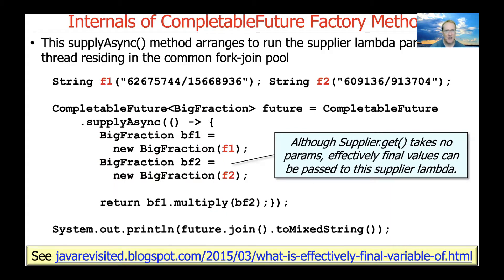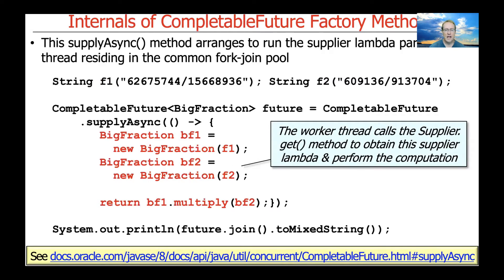We're using effectively final variables. When we make this call, those values are captured — that's the fancy name for it — and they will be used later when the actual computation occurs in a different thread of control. Those values will not change because they are effectively final. You can read more about effectively final in the link at the bottom of the page. The supplier lambda is going to get passed down as a message throughout the implementation of the CompletableFutures framework.